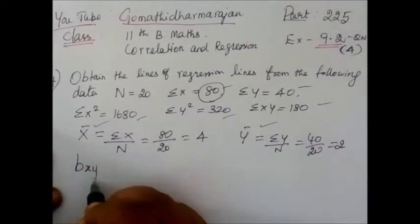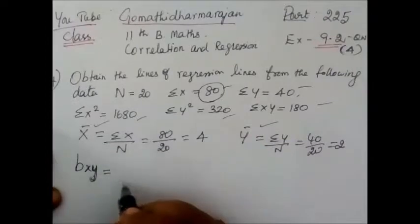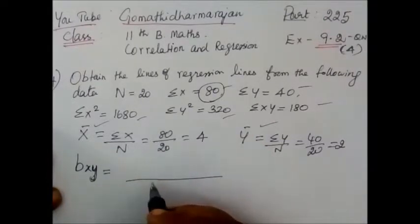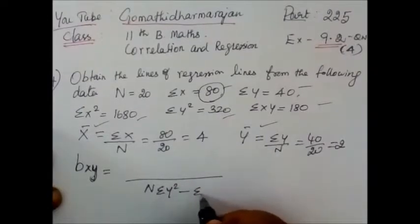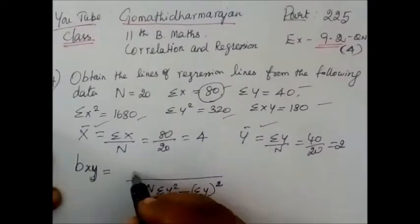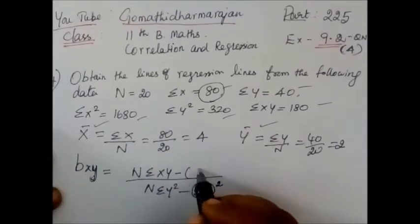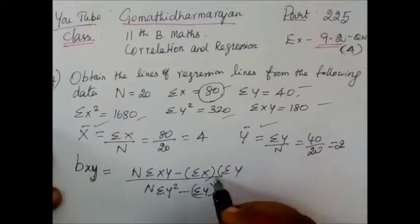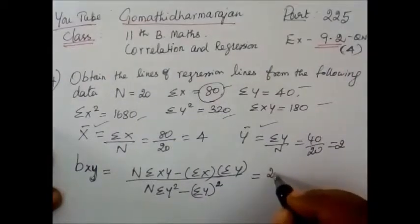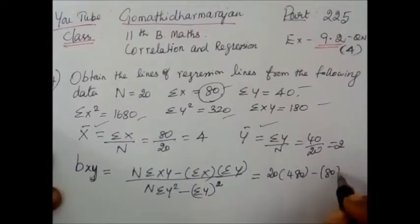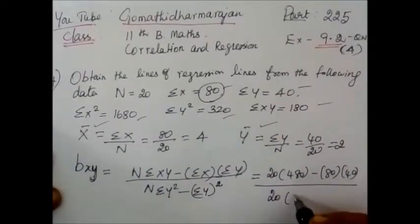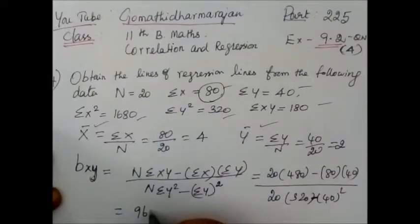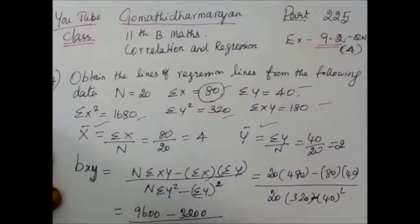Next, we want to find the regression coefficient b_xy. The formula involves n·σy² minus (σy)² in the denominator, and n·σxy minus σx·σy in the numerator. Substituting values: 20 times the relevant sums. That gives us 3200 divided by — we compute 6400 minus 1600.